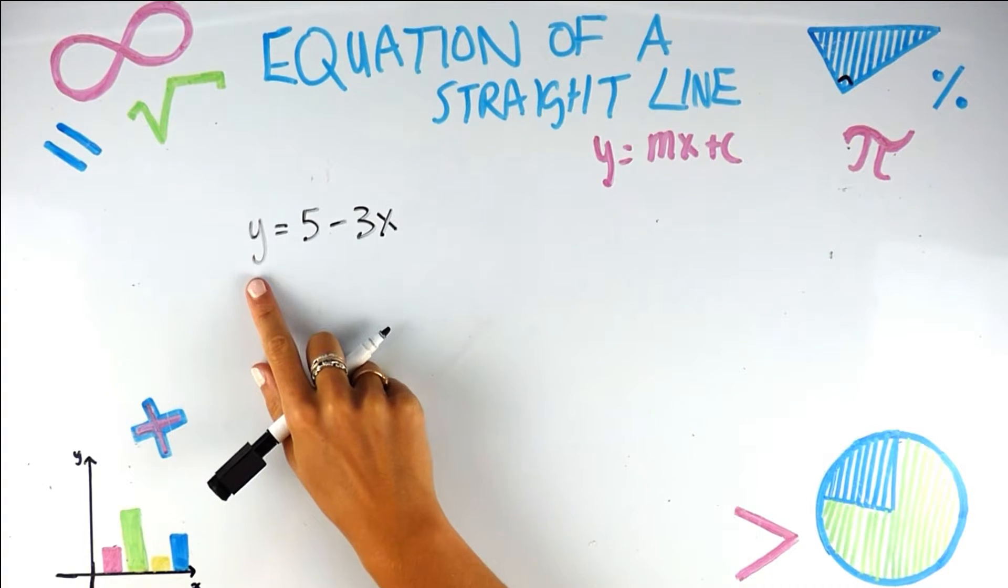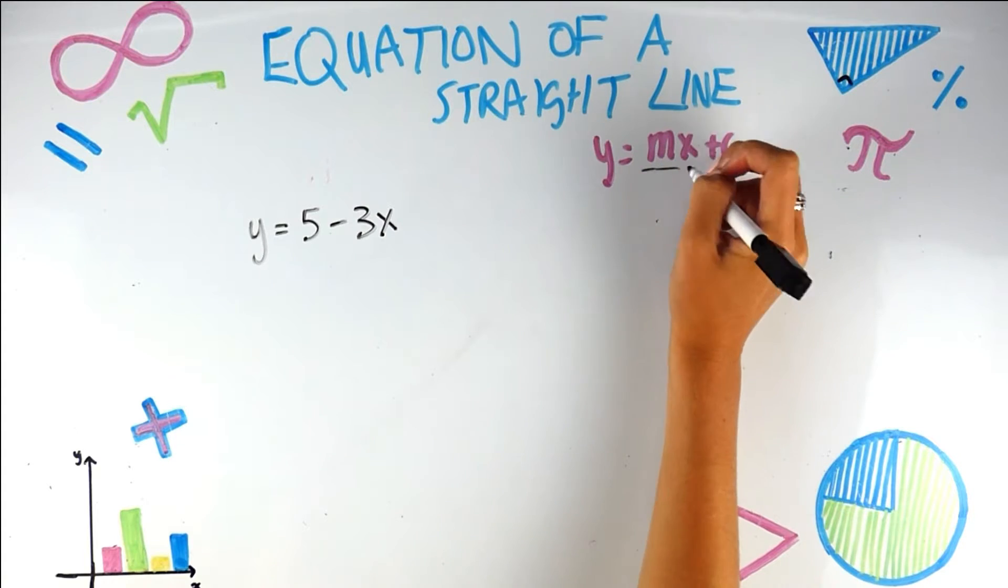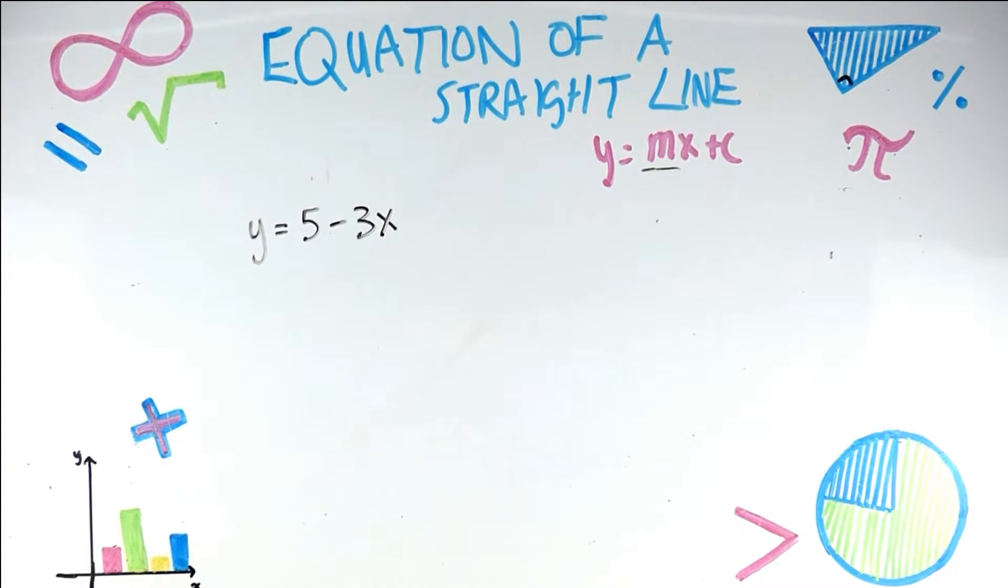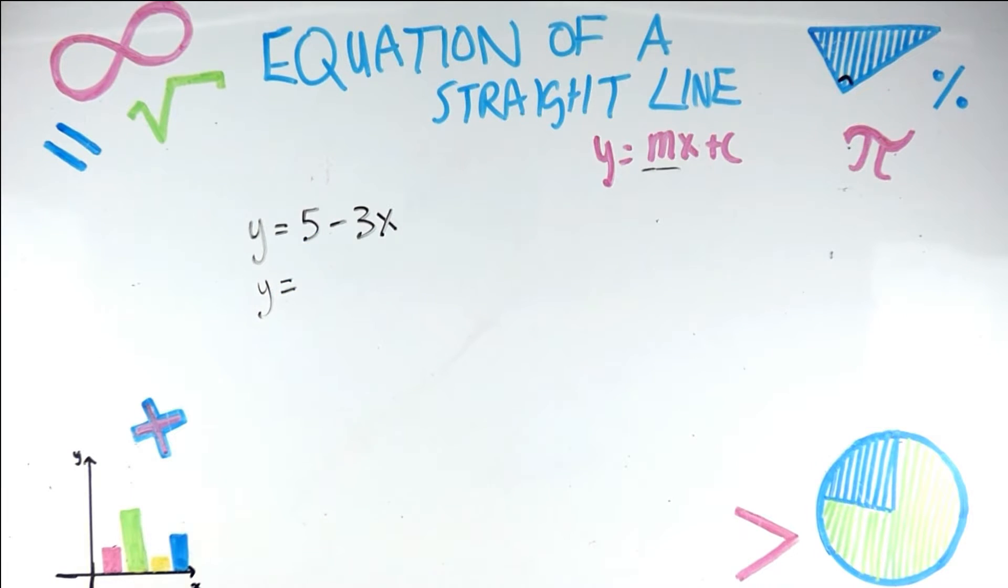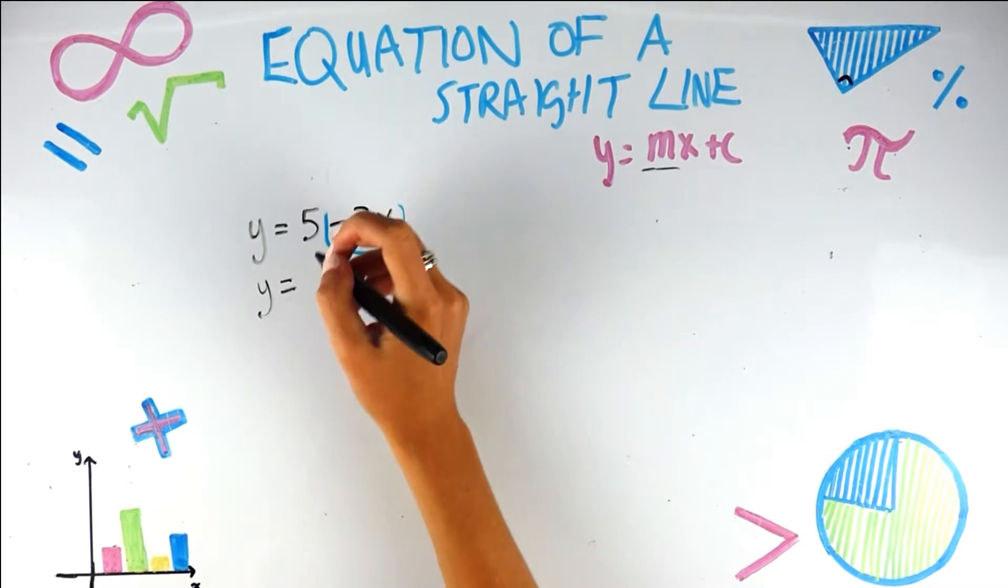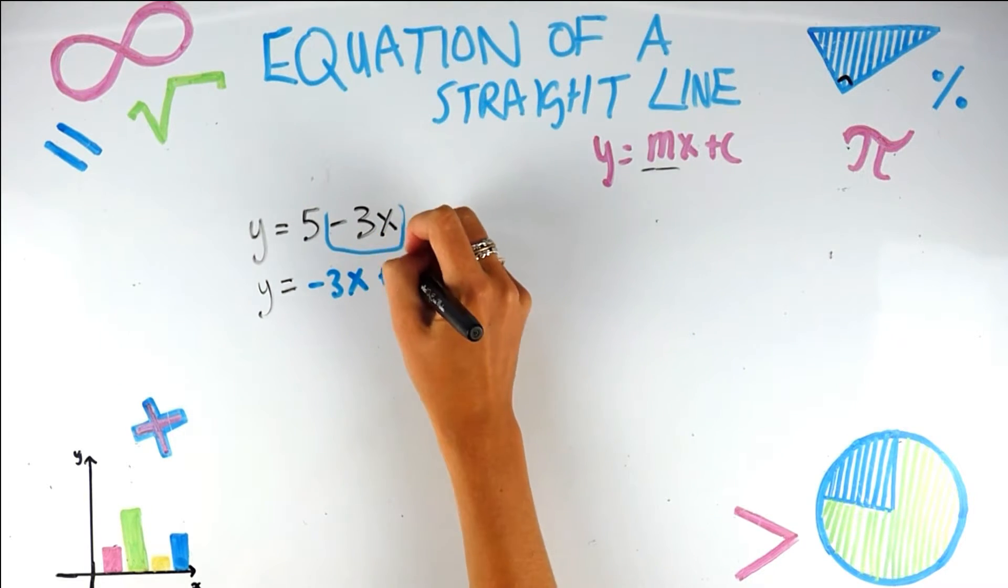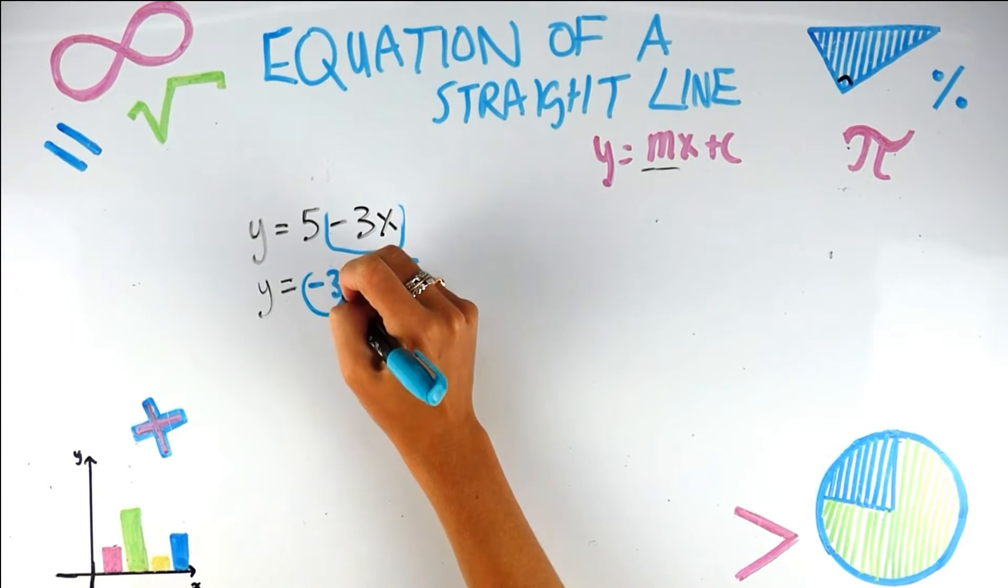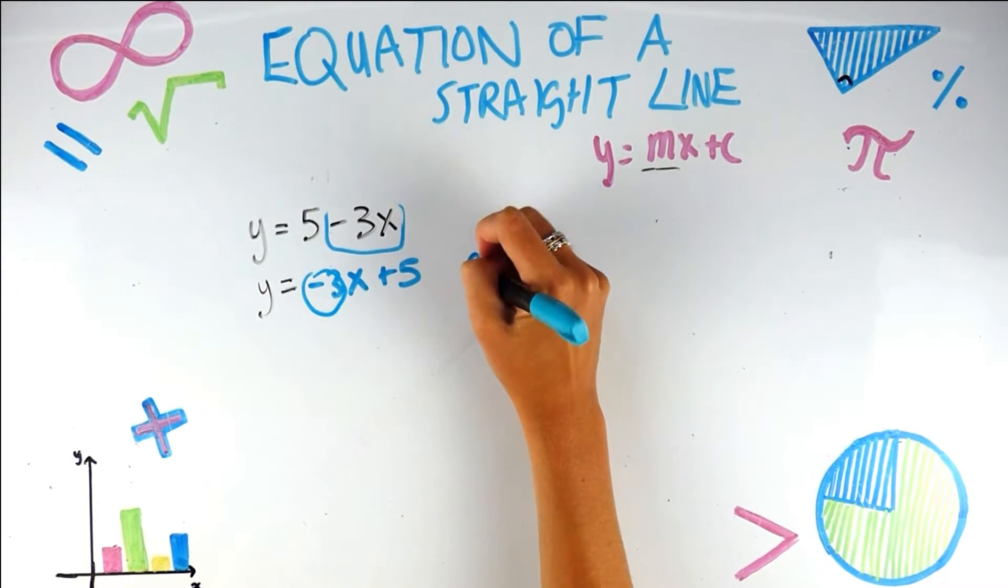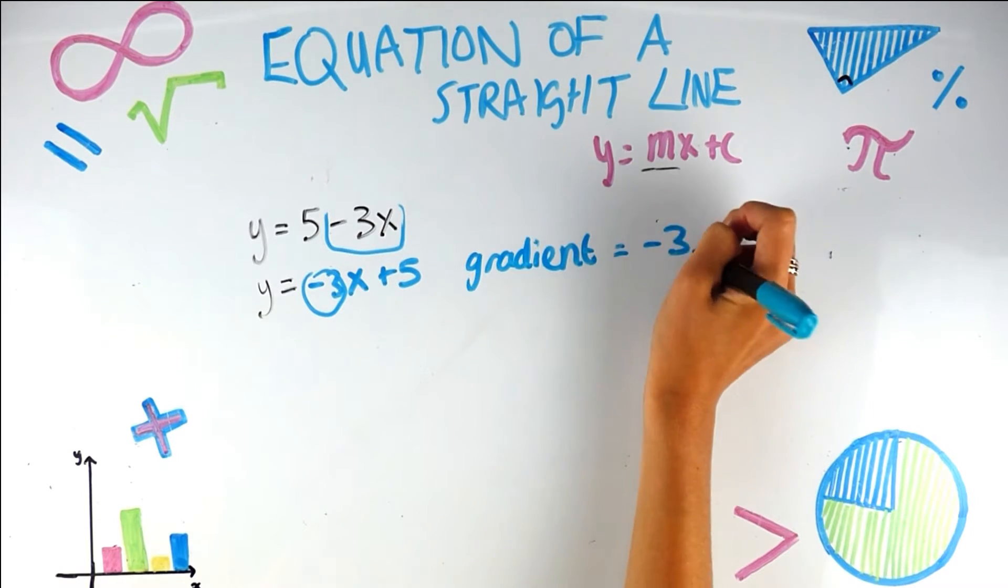So we know the gradient is m, x. This here is called the coefficient of x. Coefficient is the term for the number before x. So if I rearrange that into this formula, this formula, this. So we've got y equals m, x. So this is where the x is. So we've got minus 3x and the plus c plus 5. Therefore, I can now straight away read off. We know m is the gradient. This is the gradient. So the gradient is minus 3.